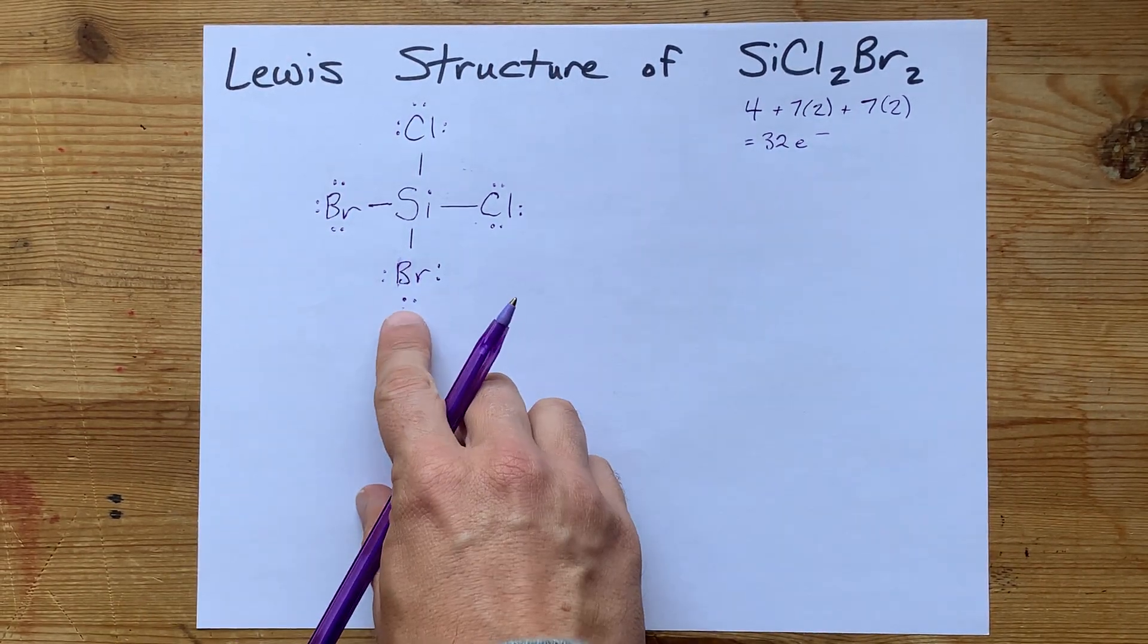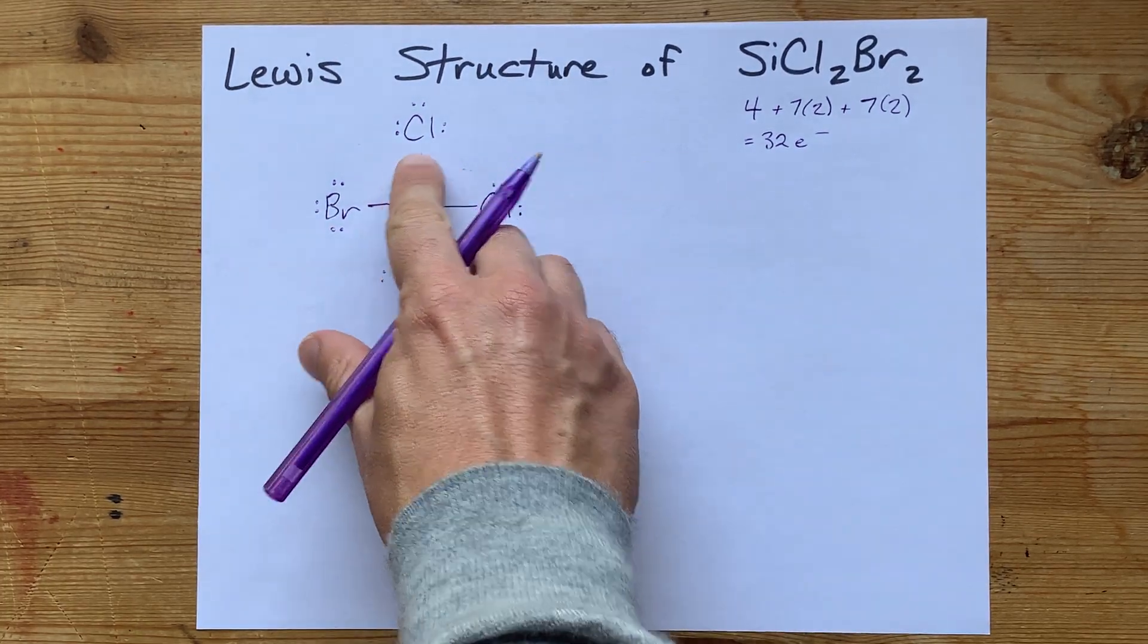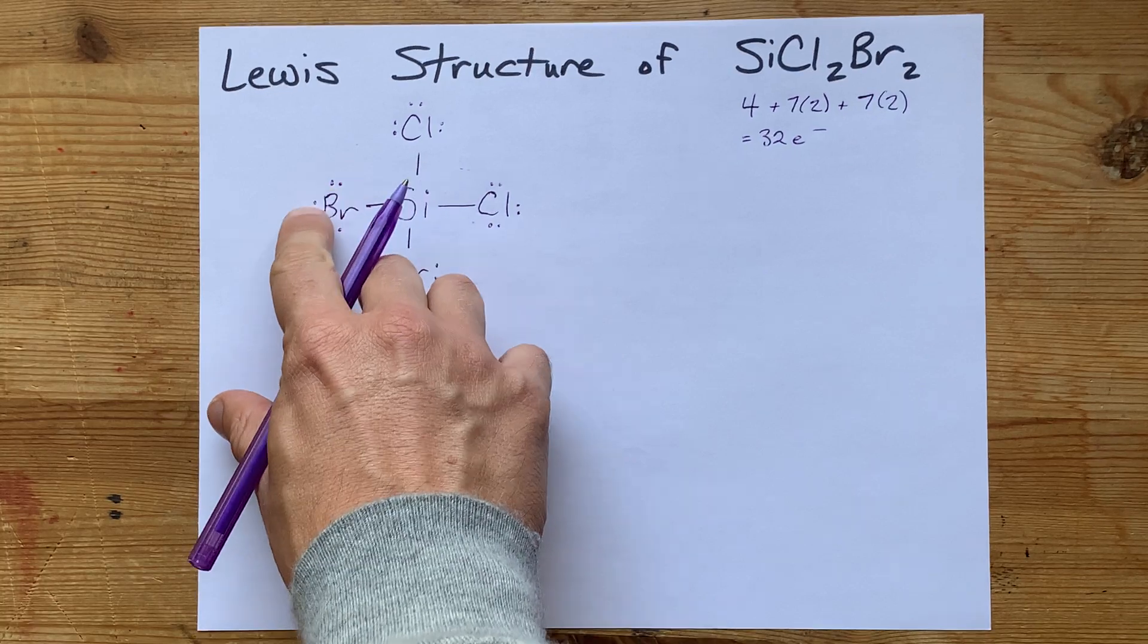And in fact, I believe I completed the octet on each outer atom. Checking the first: 2, 4, 6, 8, yes. Second: 2, 4, 6, 8, yes. Third: 2, 4, 6, 8, yes. Fourth: 2, 4, 6, 8, yes.